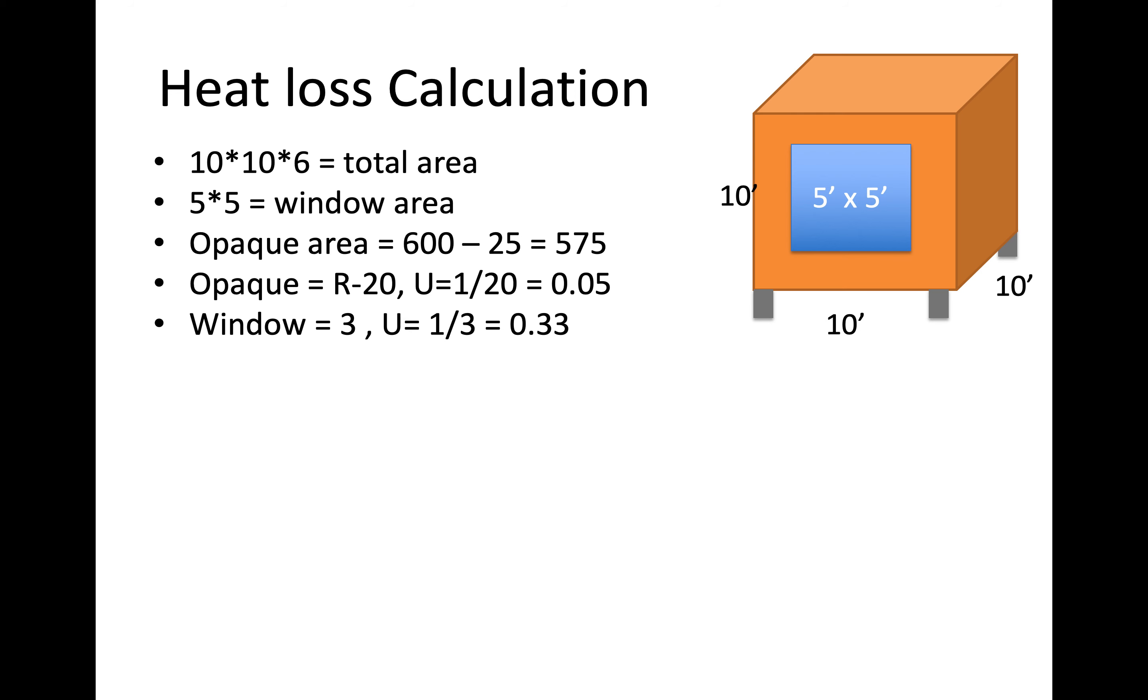And then the r values of each characteristic is also important so the opaque areas are r20 so to find the u factor, because we can't average our values just area weighted u factors, is going to be the reciprocal so 1 over 20 equals 0.05. So that's our u factor for the opaque areas and then the window, we know it's an r3 window, so 1 over 3, that's 0.33 for our u factor there.